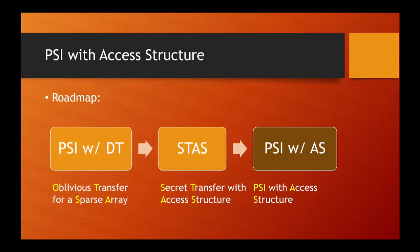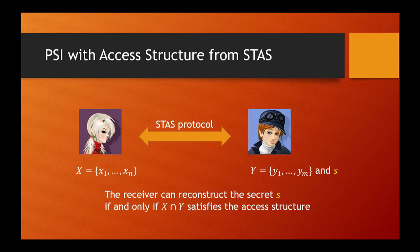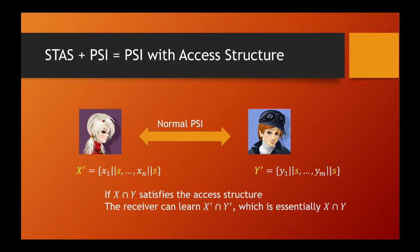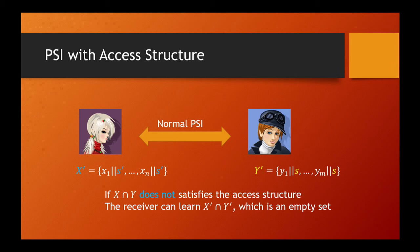With STAS, PSI with access structure is readily achievable. The sender randomly selects a secret S and engages in a STAS with the receiver. At the end, the receiver can reconstruct the secret if and only if the intersection satisfies some access structure. The secret S serves as an access token deciding whether the receiver can get the intersection or not. In more detail, the sender and receiver engage in a normal PSI over the set of elements, but every element is appended with the secret value S. If the receiver obtains the secret token S in the previous step, she can learn the intersection; otherwise, the intersection will appear as an empty set.